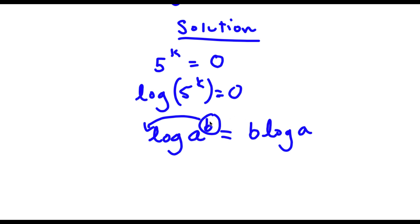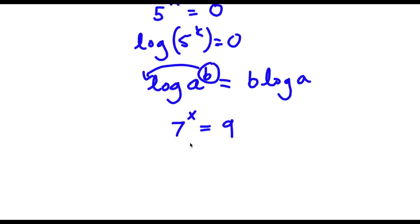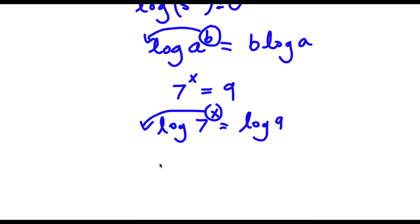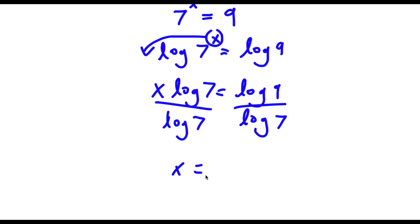What is actually so useful about this property: let's say we have 7 to the power of x is equal to 9. Before using this property, x is an exponent and we can't really do much when x is an exponent, because it's really hard to solve for x, especially since x is going to be a decimal. So by using this property, we first take the log on both sides, and then we can move x to the front. So we have x times log 7 is equal to log 9, and now because x is an actual term it's pretty simple to solve for. All we have to do is divide by log 7 on both sides and we get x is equal to log 9 over log 7. So as you can see, this property is really useful for solving for x when it's an exponent.